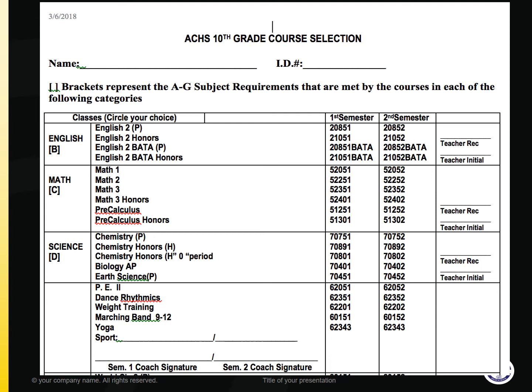The next category is Science and there are a couple of different options: Chemistry College Prep, Chemistry Honors, Chemistry Zero Period, Biology Advanced Placement, and Earth Science. You will also get your current science teacher's recommendation and signature.